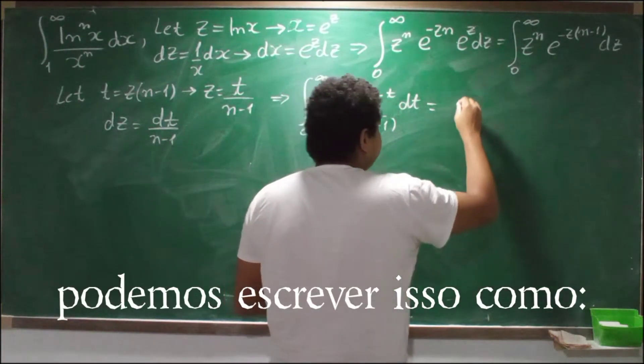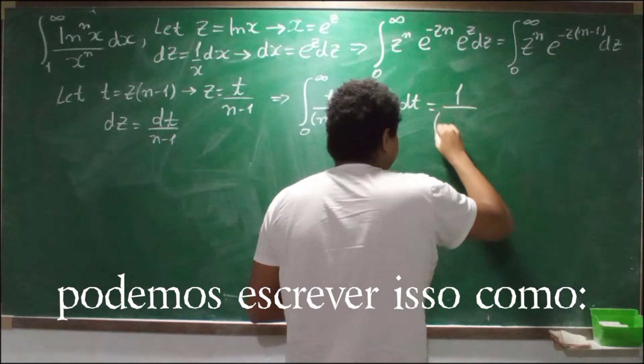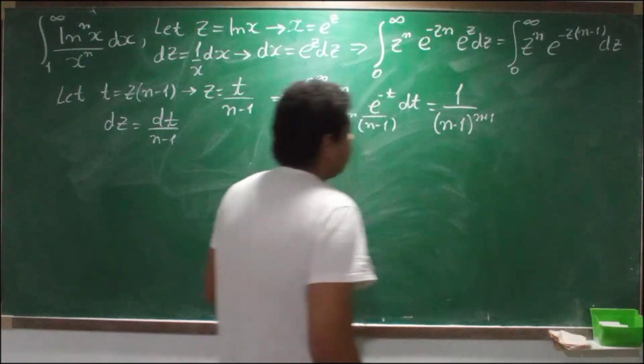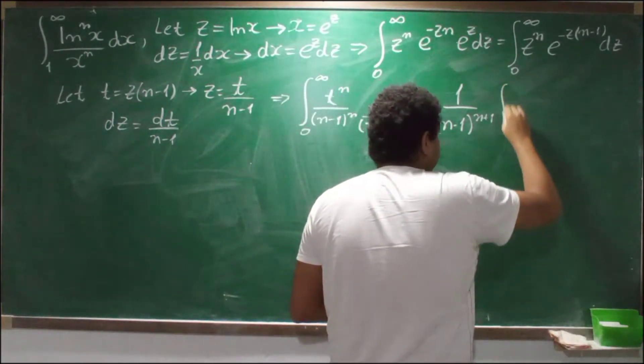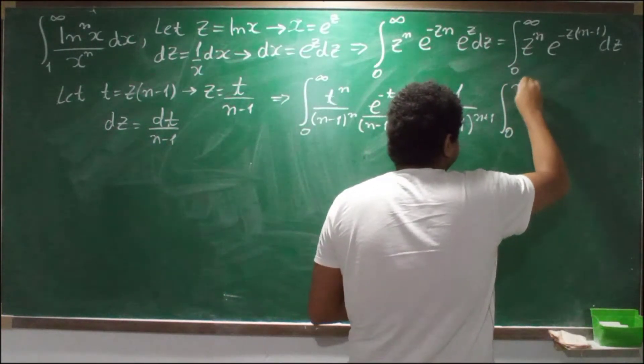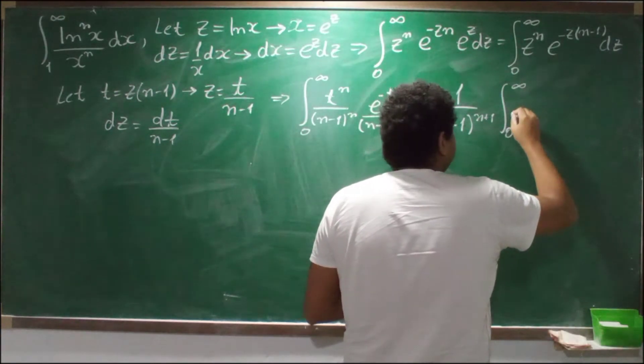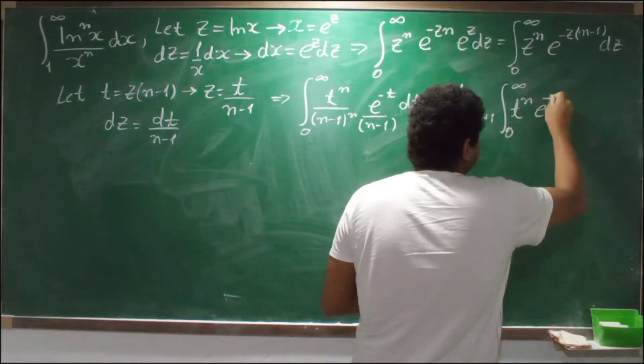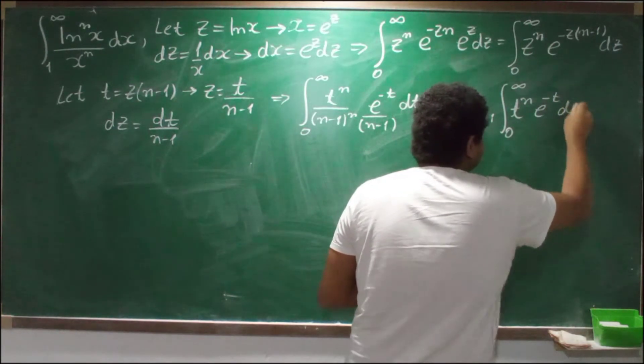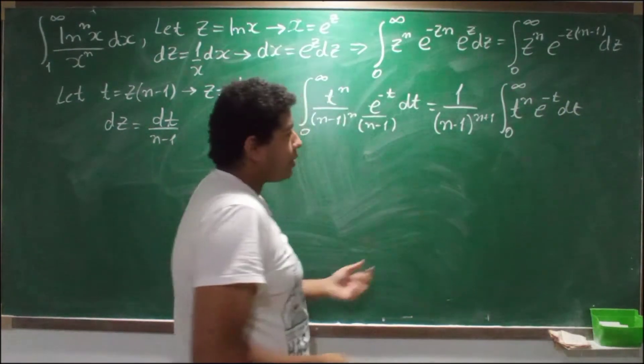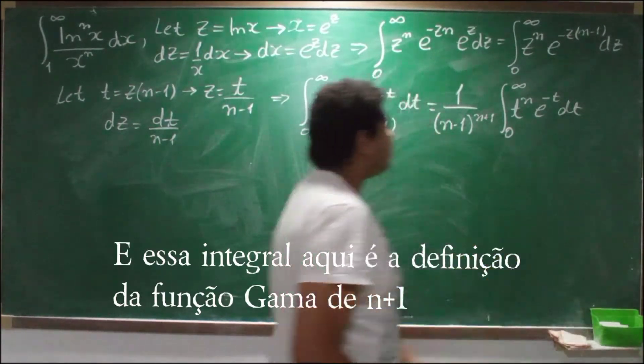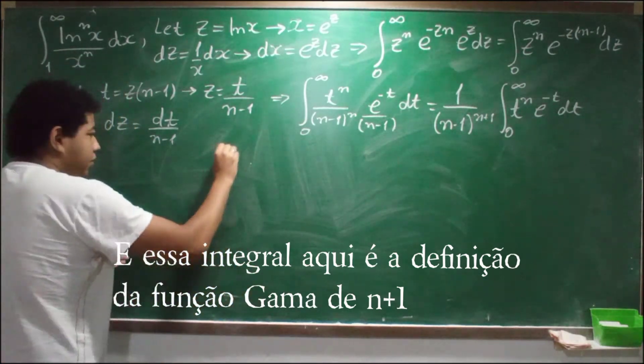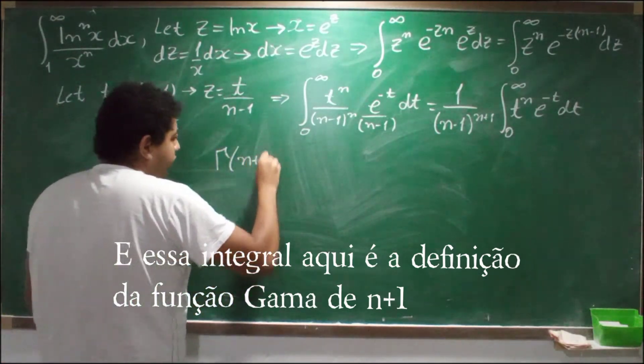We can write this as 1 over n minus 1 to the n plus 1 power times the integral from 0 to infinity of t to the n times e to the minus t dt, and this integral here is the definition of the gamma function from n plus 1.